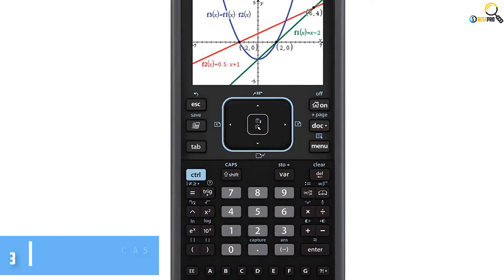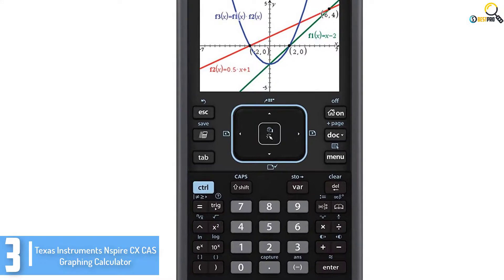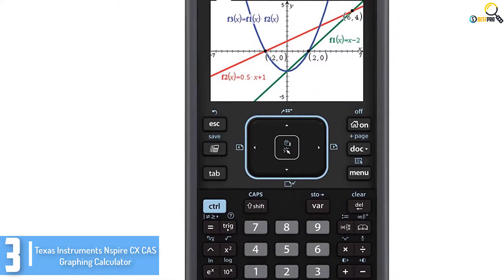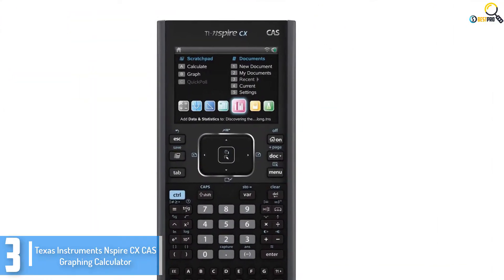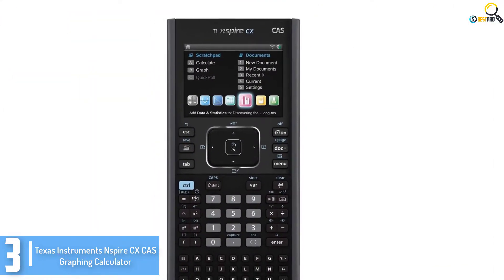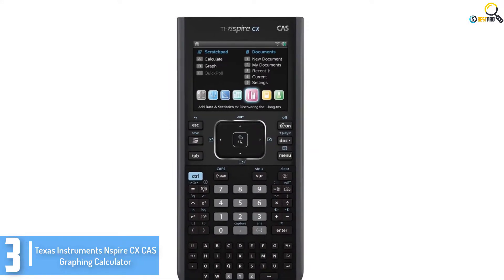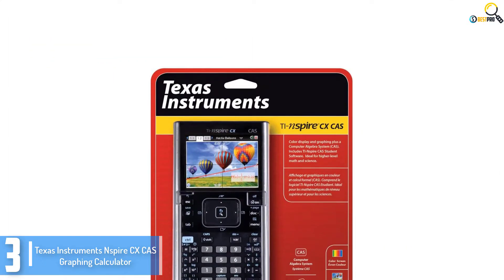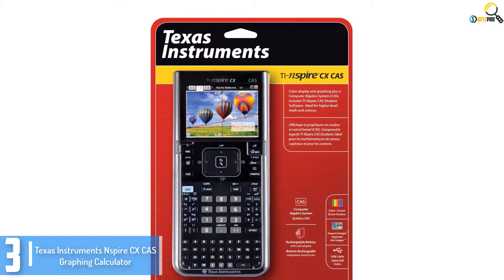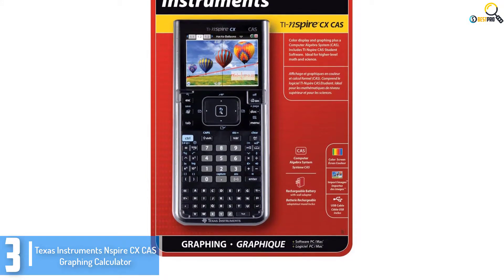At number 3, we have the Texas Instruments Inspire CX-CAS Graphing Calculator. For the final graphing, the Texas Instruments Inspire CX-CAS Calculator is a great choice that gives both manual and automatic 3D functions graphs and rotates. It additionally has a graceful design that makes it easily portable and comfortable in the hands.